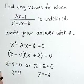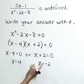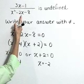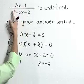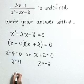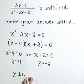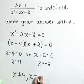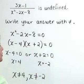Notice that if we substitute 4 or negative 2 into the denominator, it will cause a 0 denominator. Therefore, let's write our answer as x cannot equal 4 and x cannot equal negative 2.